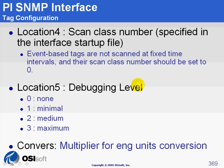The last two location codes: location 4 is the number of the scan class you want to use, as configured in ICU. Location 5 is the debugging level. Normally set to 0, the interface will not write anything to the pipc.log file. If you are not getting the expected result from a tag, you could set location 5 to 1, 2, or 3 to get more or fewer messages written to the log file.